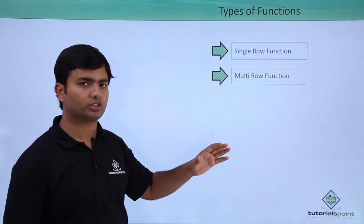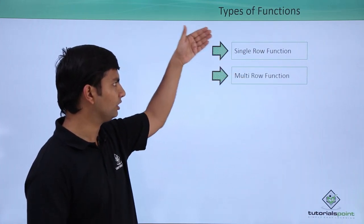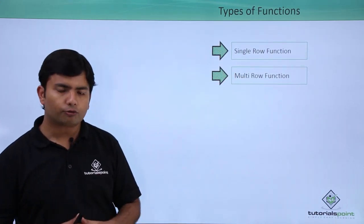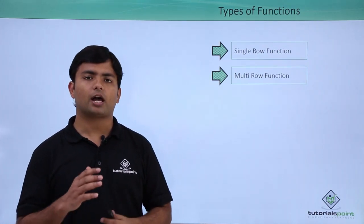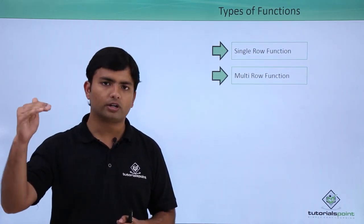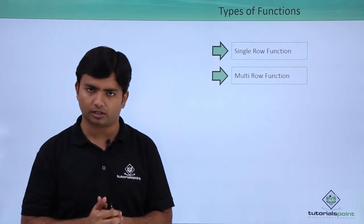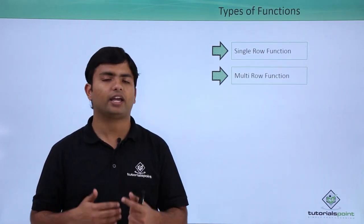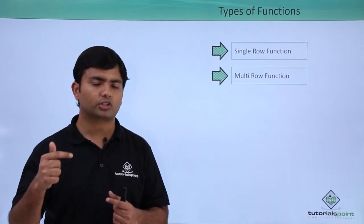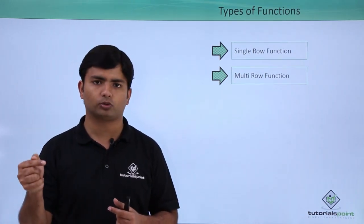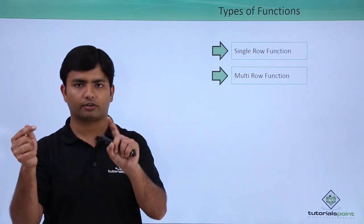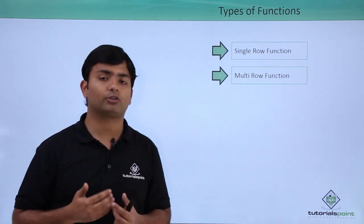You can classify functions into two major parts: single row function and multi row function. Single row functions are applied on each row of a table and return one record per data. If I'm applying a function on a table having 10 rows, this particular function will be applied on each row of that table and it will return one result per record.